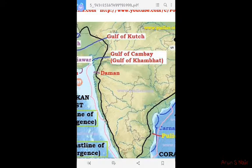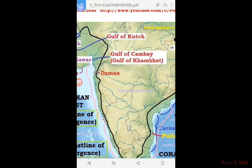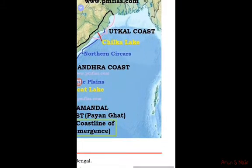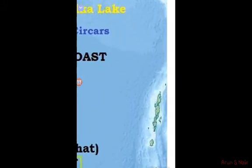Now we will talk about the islands. There are two small groups of islands. One of these groups is in the Bay of Bengal, which includes the Andaman and Nicobar Islands.